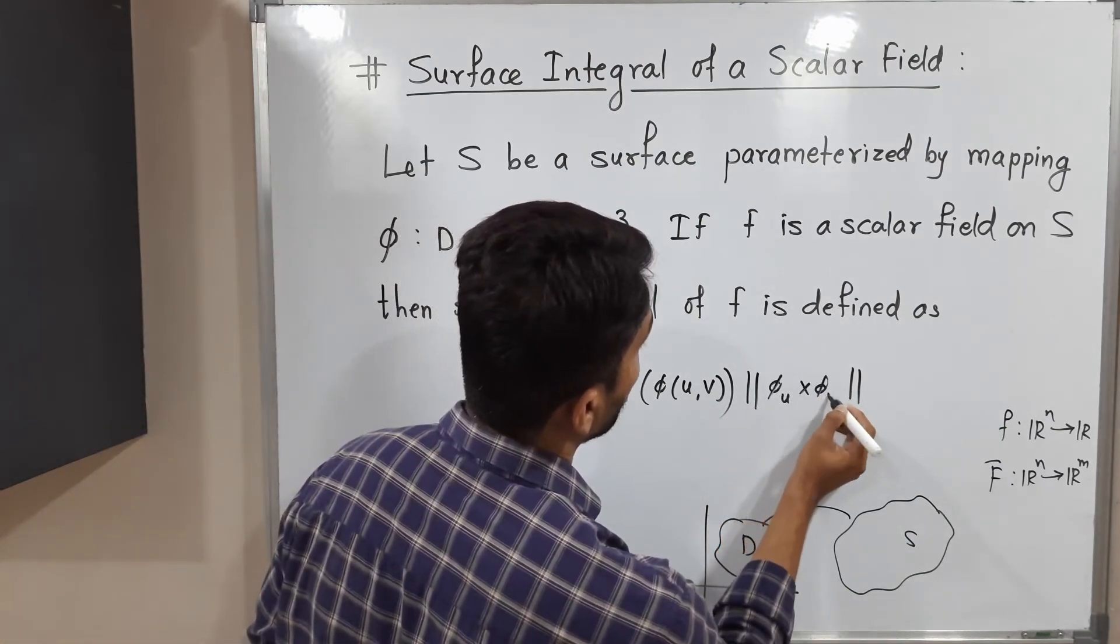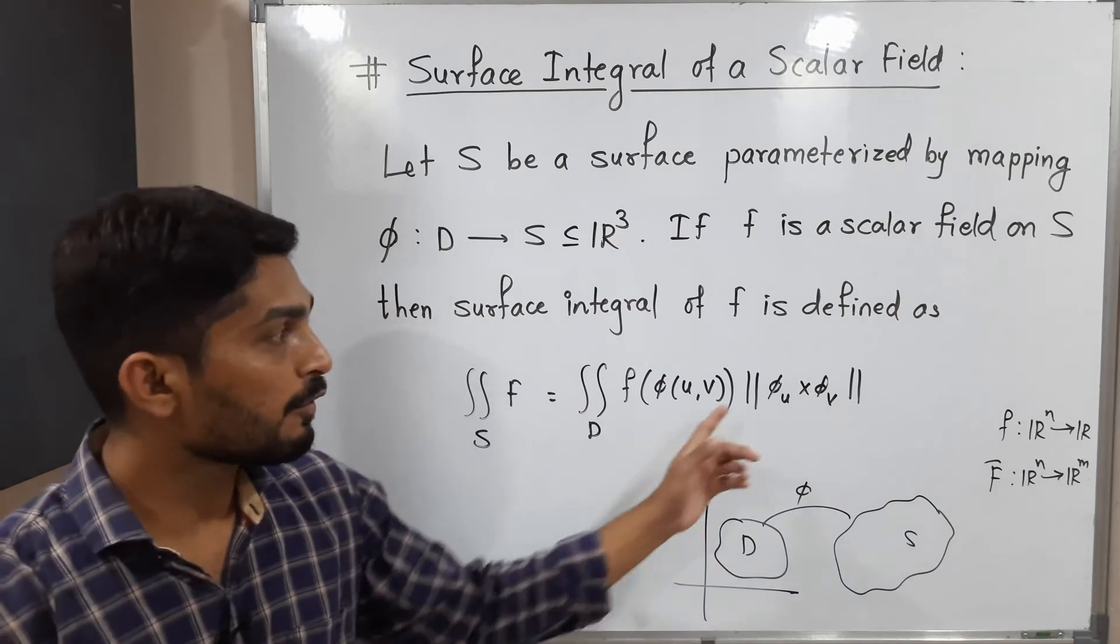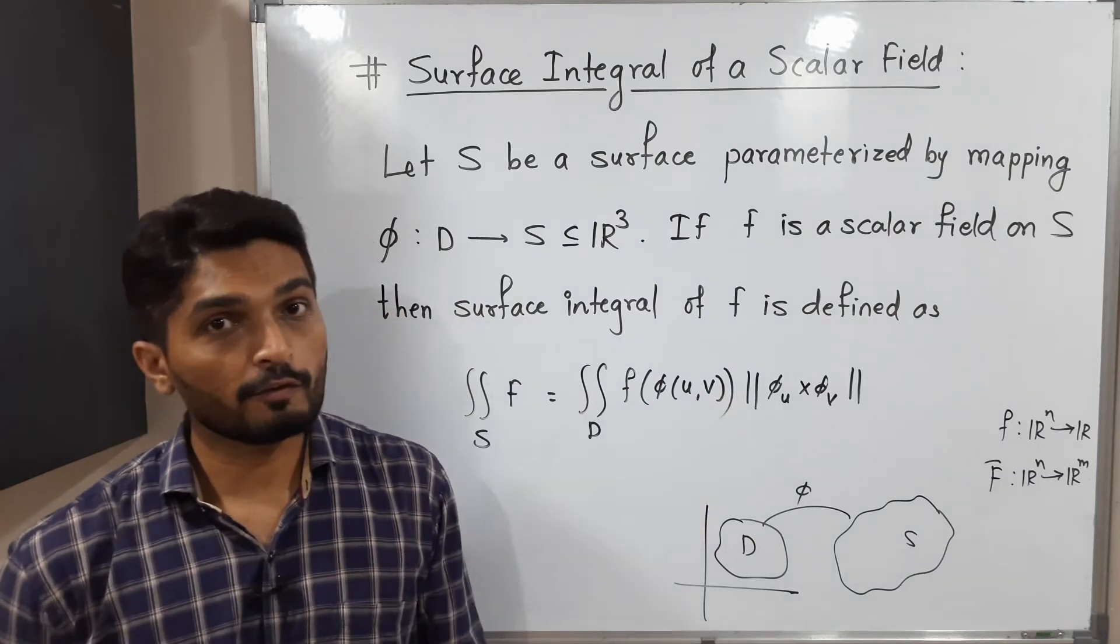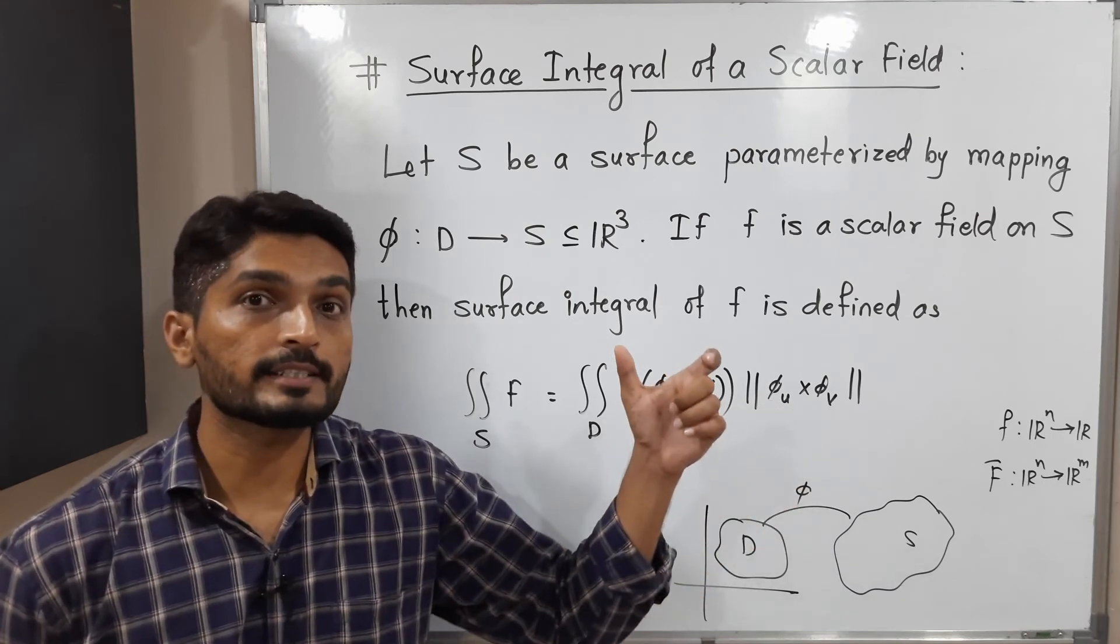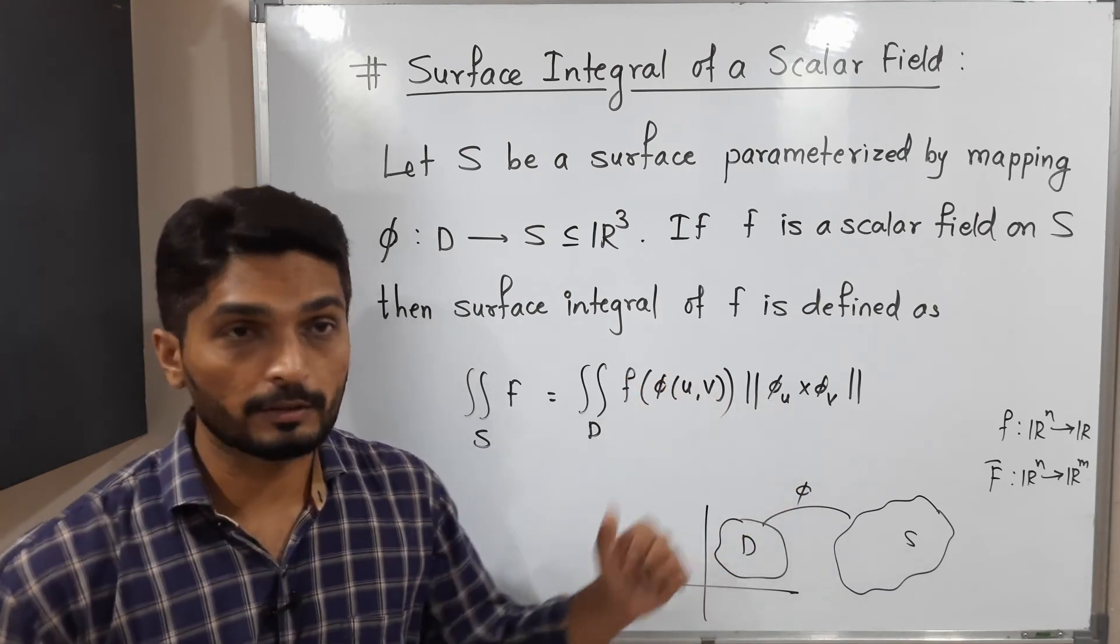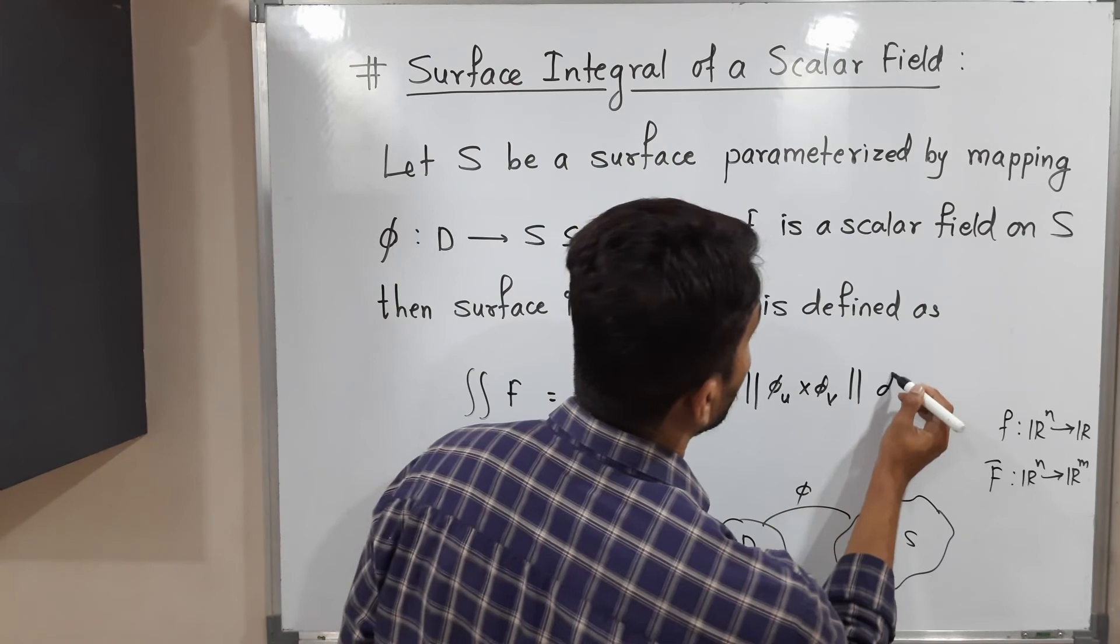φ_u cross φ_v. That means derivative of φ with respect to u, derivative of φ with respect to v, we take their cross product, find its norm, and that norm we put here into du dv.